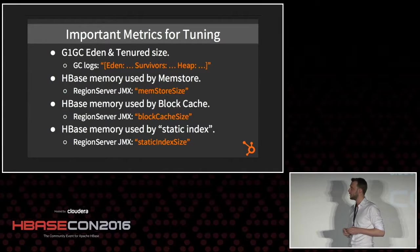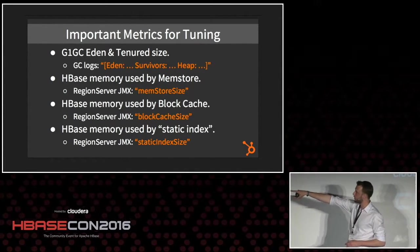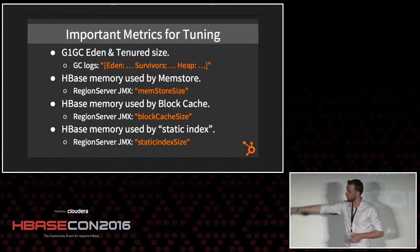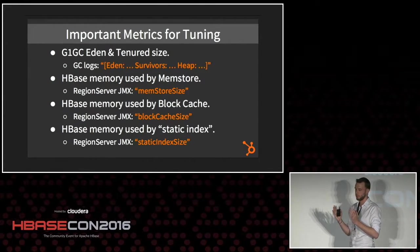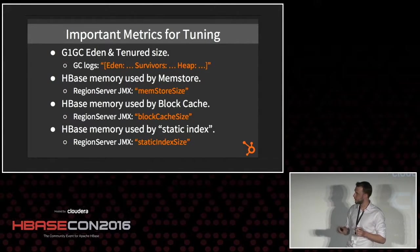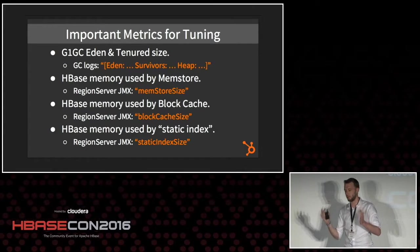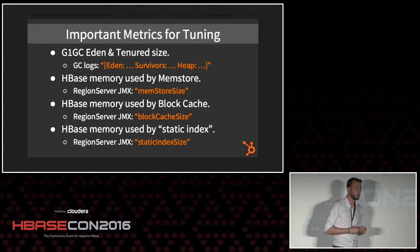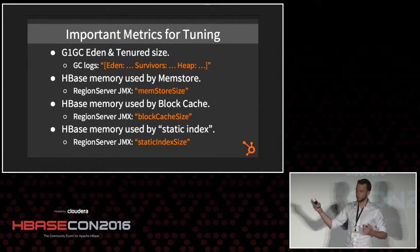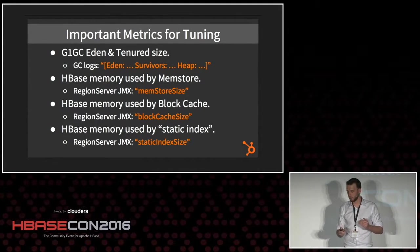For tuning your specific cluster, here are the important metrics to track. Eden and tenured size can be calculated from your GC logs — after each GC event there will be a line showing Eden allocation and heap usage; subtract survivors from heap to get tenured size. From region server JMX stats, collect memstore size, block cache size, and static index size — the three main uses of memory in a region server. Throw these into your monitoring system and observe them over time.